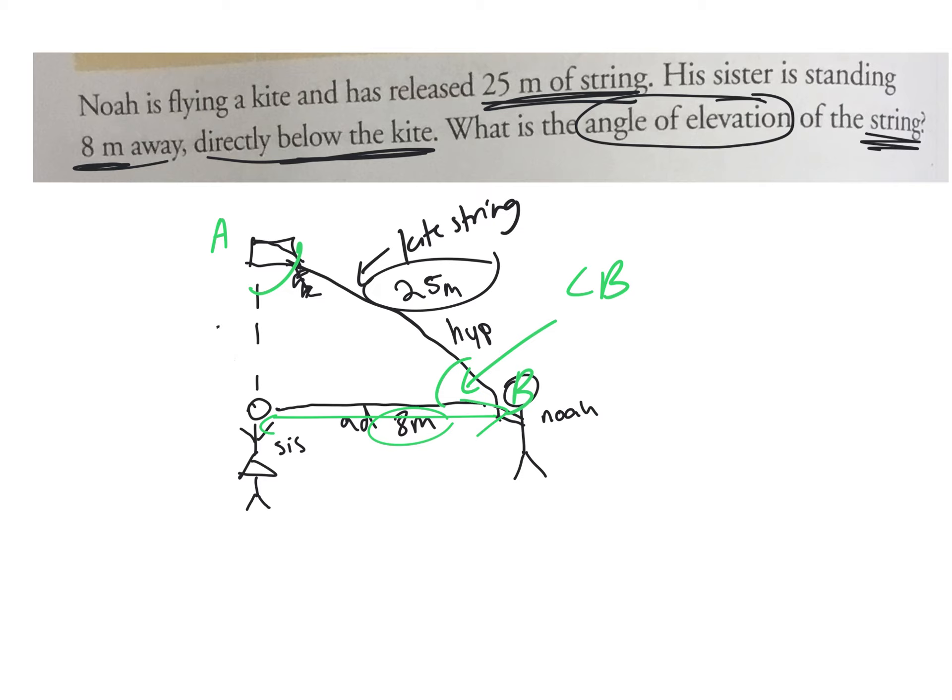We have adjacent in relation to this angle, and of course this is a hypotenuse because it's across from a 90 degree angle. In SOH CAH TOA, which ratio do we use for adjacent and hypotenuse? Cosine. Good. Adjacent and hypotenuse.